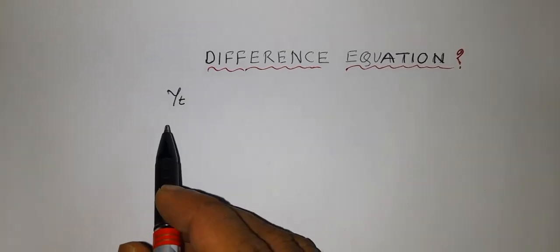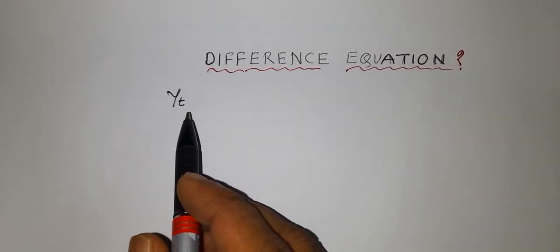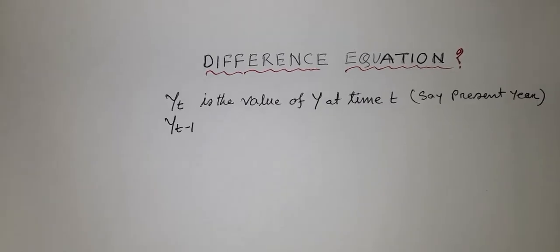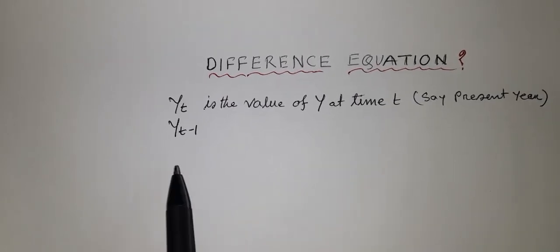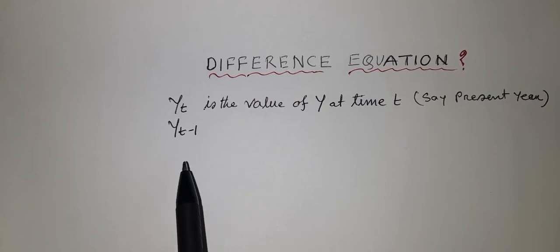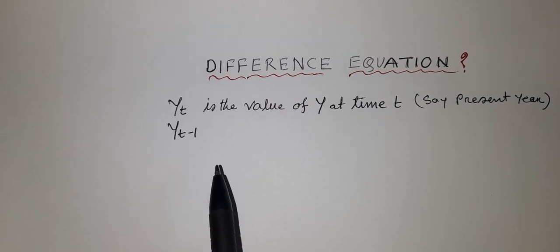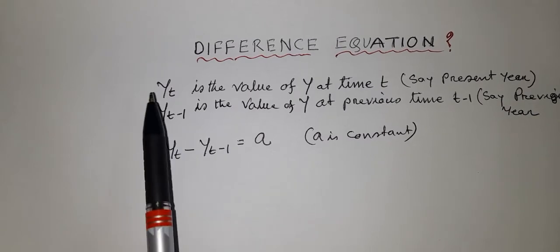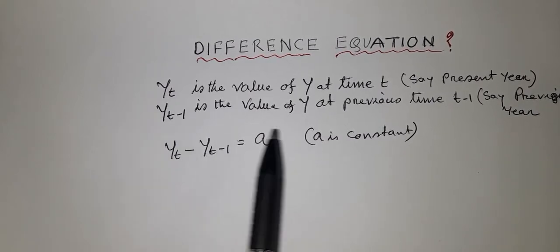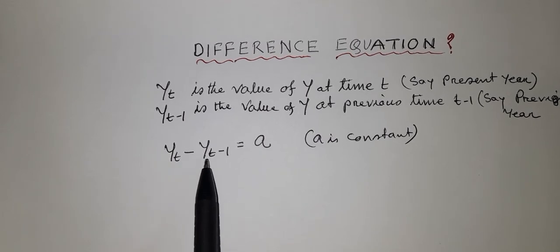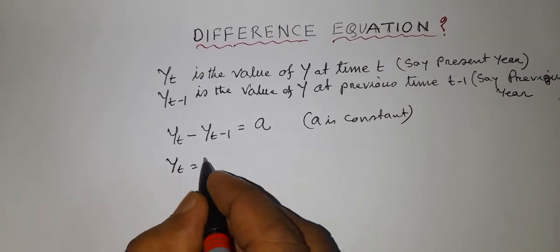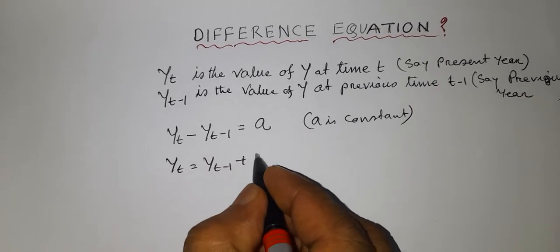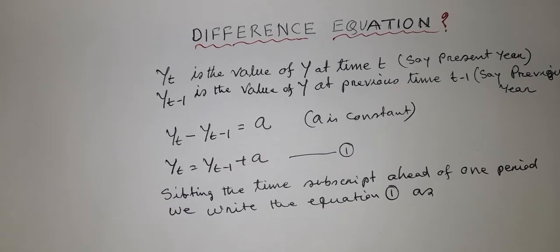Let us consider y_t as the value of y at time t, where t represents the present year. Suppose y_{t-1} is the value of y at the previous time or previous year. The difference between y_t and y_{t-1} is a constant a, that means y_t minus y_{t-1} equals a. Or, y_t is equal to y_{t-1} plus a. Say, this is equation 1.